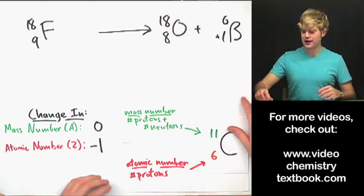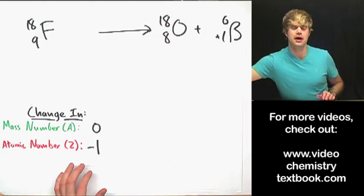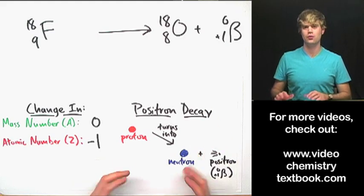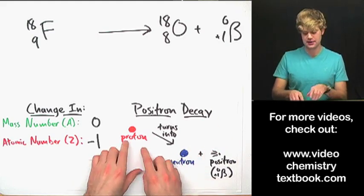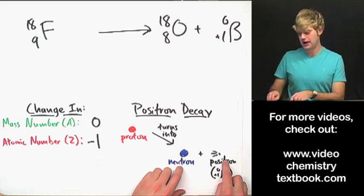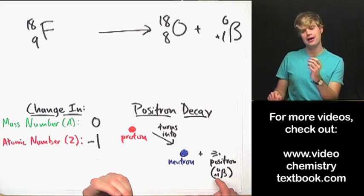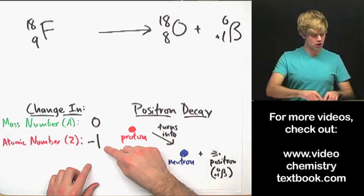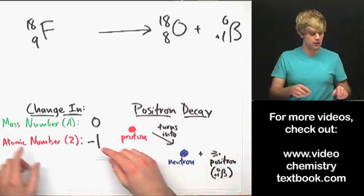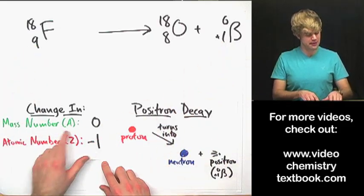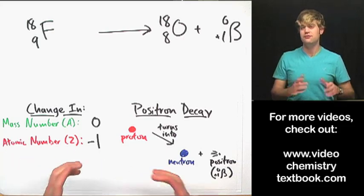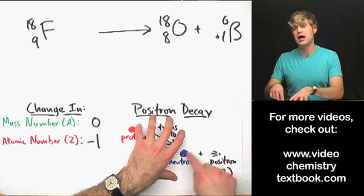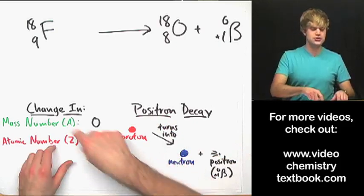When you're learning this I recommend trying to remember two things. One is what actually happens in positron decay — in the nucleus, a proton is turning into a neutron and you get a positron. But also, so you can do the problems faster, try to learn the change in the mass number and the atomic number. If possible, do both — that way you'll understand what's actually going on and you'll also be able to do the problems fast.